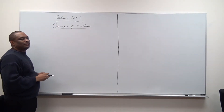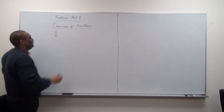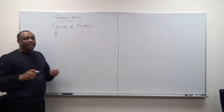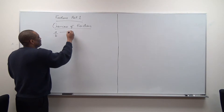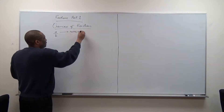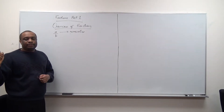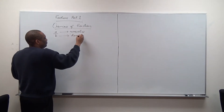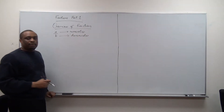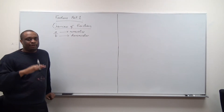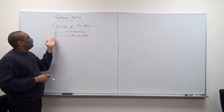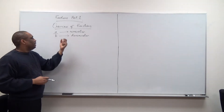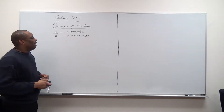We look at a fraction as a term that has a numerator and a denominator. For instance, if we say a over b — a could be anything, b could be anything. A is referred to as the numerator, which is the top part of the fraction, and b is referred to as the denominator, which is the bottom part of the fraction.